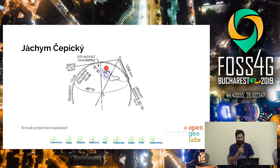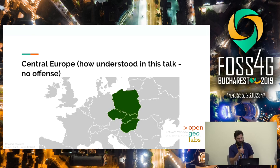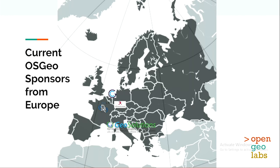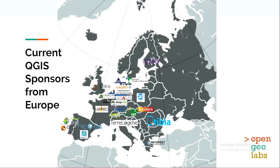I would like to bring the open source software we are working on and working with to the normal users in the outside world somehow. To make one thing clear: if I am referring to central Europe, I will be referring more to the Visegrad countries, which is a region based on language barriers and other things as well. If you have a look at a map of current OSGEO sponsors who are from Europe, there are only a few. The map looks slightly better if you show sponsors of the QGIS project, which I would say is simply the most used one among users all over the world.